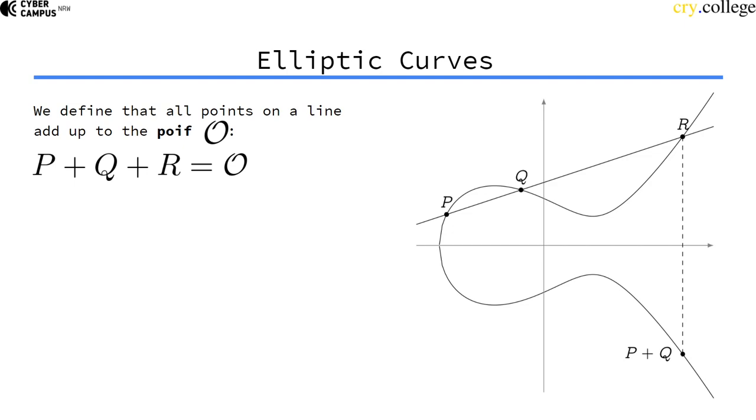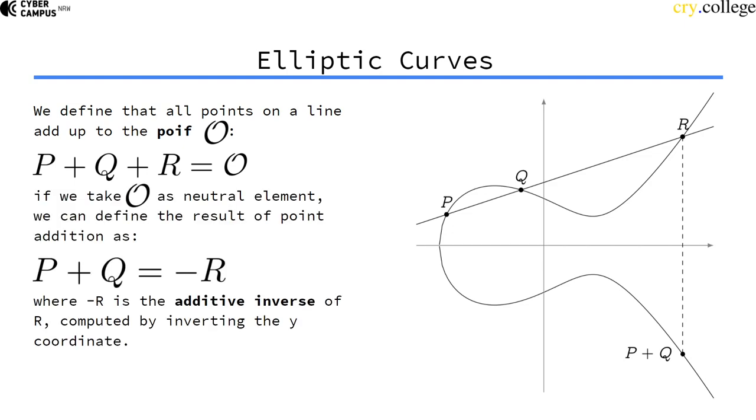If we say this mystical point at infinity, also called Poif, is our neutral element for the group we want to define, then since this is the neutral element, we can say p plus q equals to the inverse of the same point on the line.